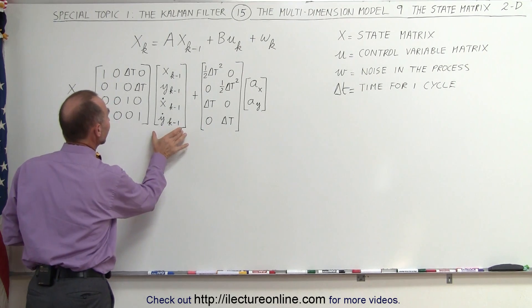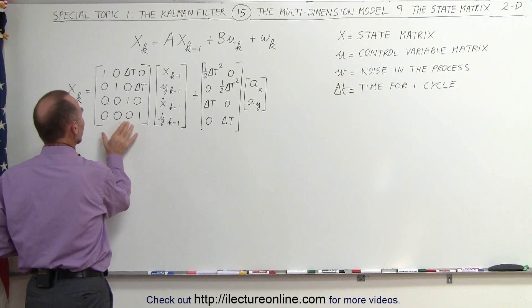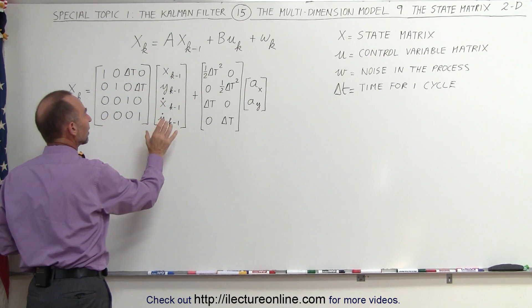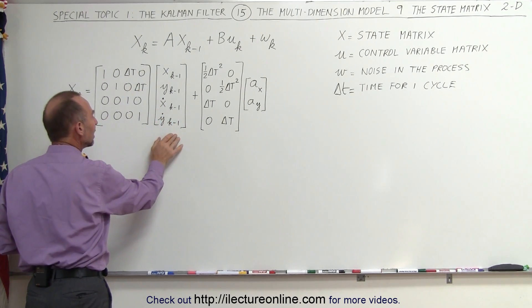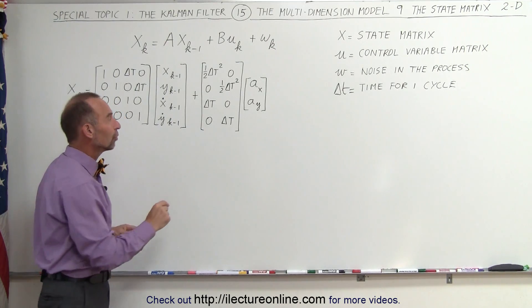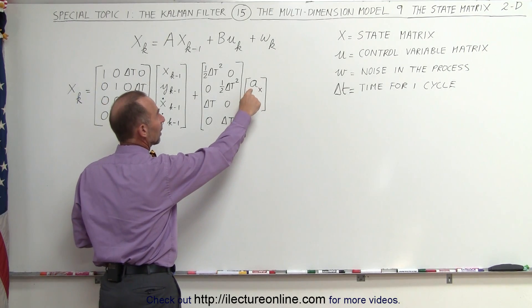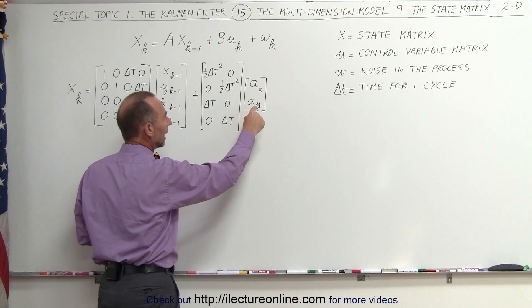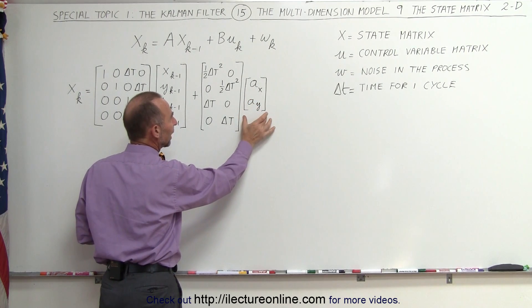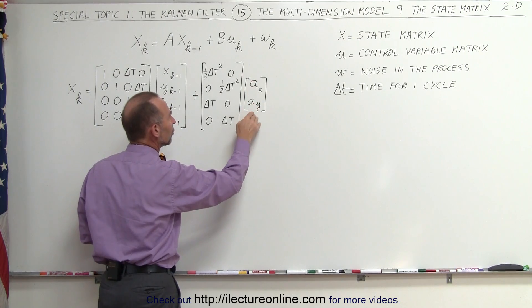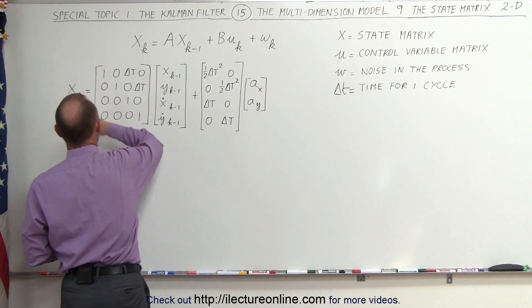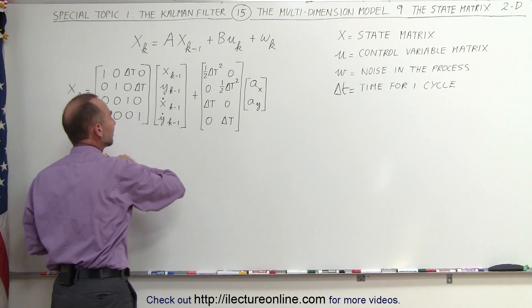We're going to multiply that previous state with the A matrix. The A matrix will make an adjustment so that based on the velocity, we can see how the position changes. We also have to make a change for the acceleration. If there's an acceleration in the x direction and there's an acceleration in the y direction, we must then multiply the control variables — the acceleration in two directions — times the B vector to convert it to the correct format of the state matrix.